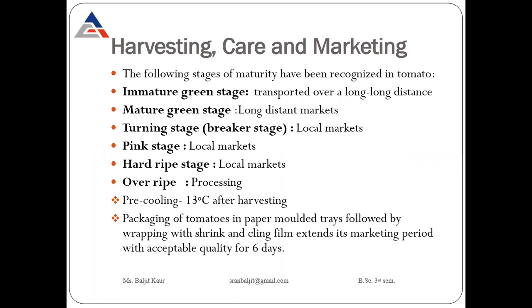Now harvesting, care after harvesting, and marketing of tomatoes. At the time of harvesting we should recognize the maturity level. There are different stages at which we can harvest tomato fruits: immature green stage, mature green stage, turning stage (also known as breaker stage), pink stage, hard ripe stage, and over ripe stage. All these stages have different purposes.